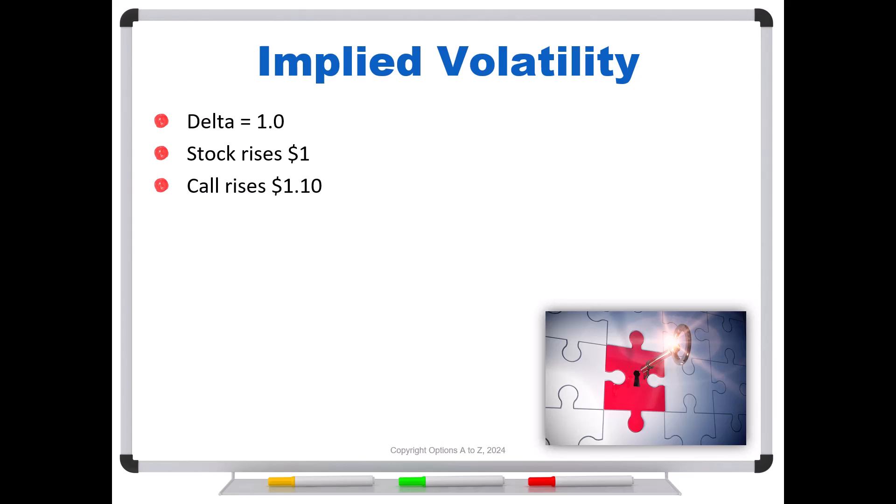Well, remember, whenever we're talking about Greeks, any of the Greeks, it's assuming everything else is constant. Time, stock price, volatility, interest rates, everything is the same. Well, evidently, everything wasn't the same. And in this example, volatility could also rise. And because the volatility increased, it simply appears that the delta was greater than one.